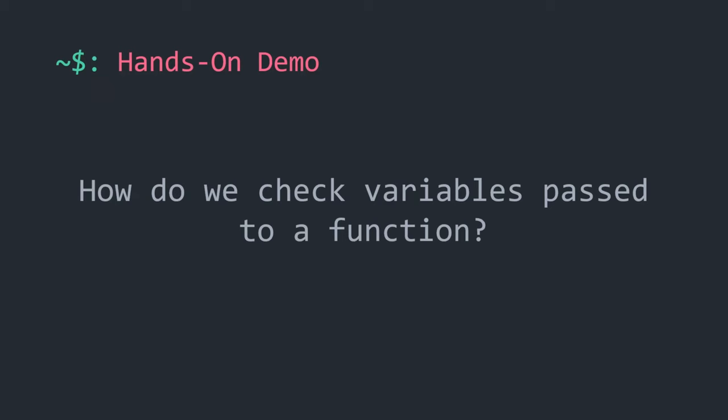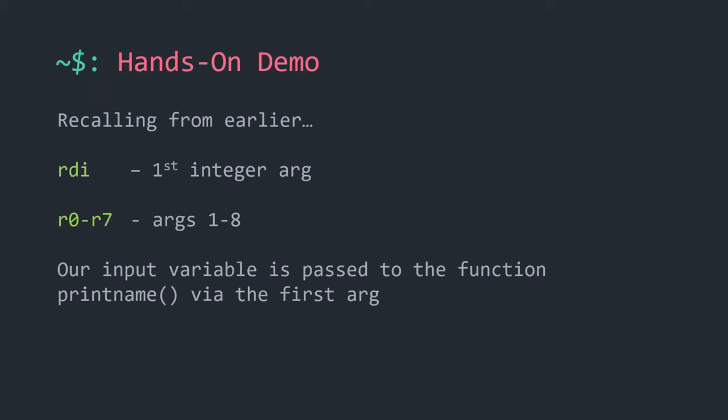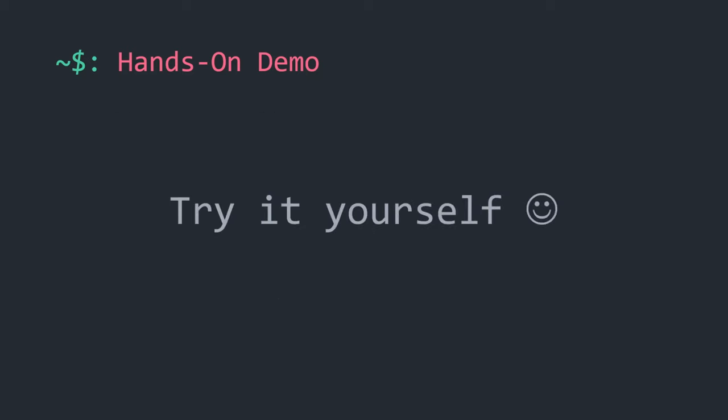For the purpose of seeing how arguments are passed to functions, demo2 has a simple function call with one argument: the user's name input. How do we check variables passed to a function? Recalling from earlier, there are registers specifically for passing arguments. In Intel x86-64, the first argument is passed through RDI. For ARM, it's passed through R0 through R7. In ARM, R0 also doubles as the register storing the return value from a function but is also used to pass the first argument.